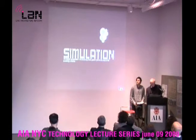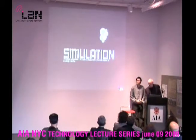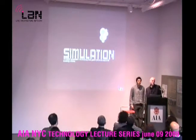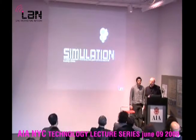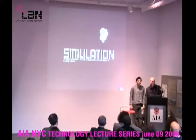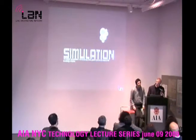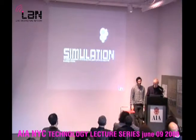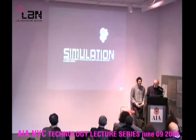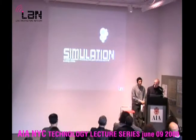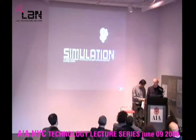The issue with parametrics and associative design is that it gives us thousands of similar options once we define some simple rules. From there, we force out a solution by adding more data — whether fabrication, construction restraints, or budgetary concerns. The problem is that it's just as likely to give you a thousand wrong solutions as a thousand right ones. So how do we distinguish successes from failures?